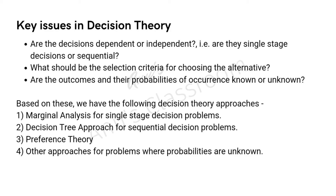The third key issue is: are the outcomes and their probabilities of occurrence known or unknown? That is, whether the problem is deterministic or probabilistic. Based on these issues, we have the following decision theory approaches: for a single-stage decision problem, we can use marginal analysis; for a sequential decision problem, we can use decision trees; for determining the selection criteria, we have preference theory; and there are also other approaches for problems where probabilities are unknown. Marginal analysis and the decision tree approach are undertaken when we know the probabilities of our outcomes for sure.